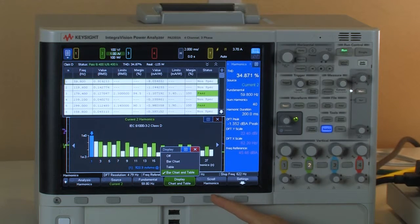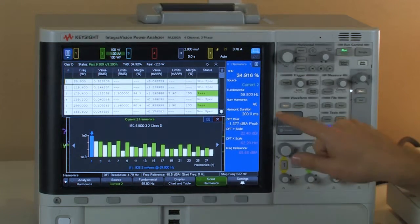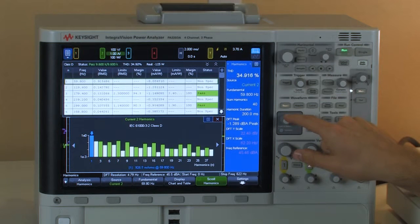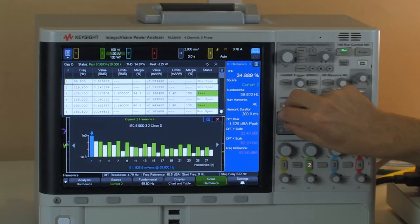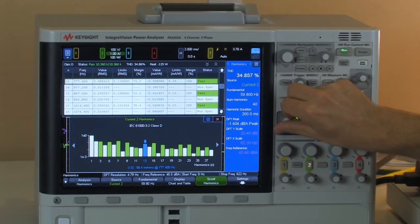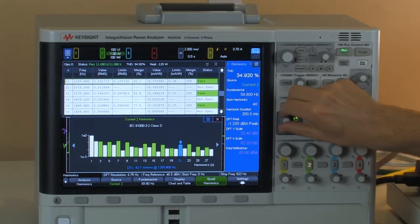The scroll harmonics button is just a nice easy navigational tool. Once you click on it, this knob is now mapped to the harmonics. And as I move them around, both the table and the chart are moving to the corresponding harmonic of interest.